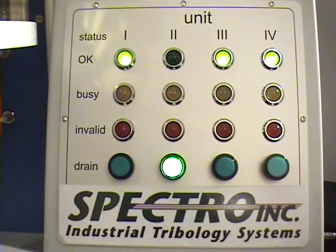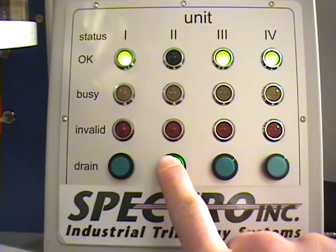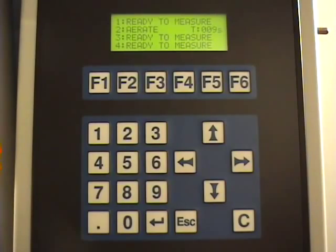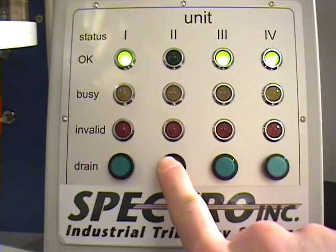To interrupt a cleaning cycle already in progress, press the drain button. Pressing it again will resume the cleaning cycle.